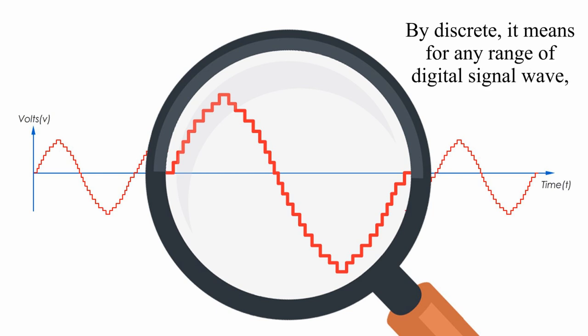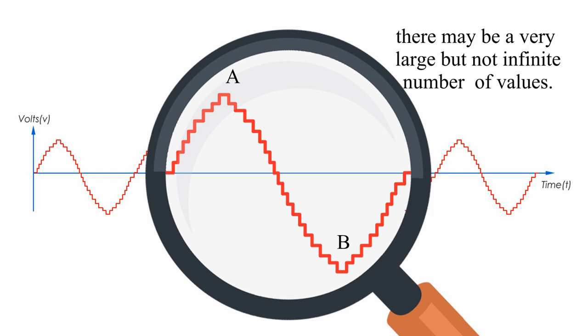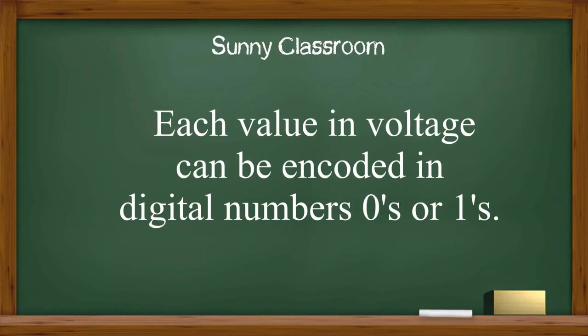By discrete, it means for any range of digital signal wave, like from point A to point B, there may be very large but not infinite number of values. Each value in voltage can be encoded in digital numbers, zeros or ones.